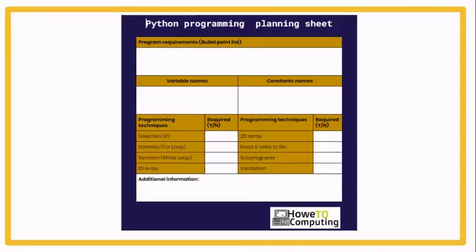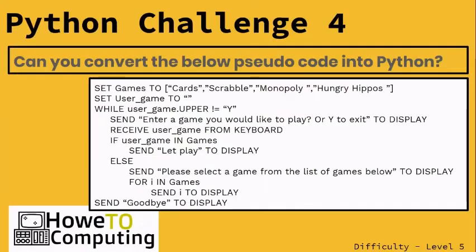One thing you need to be using throughout a lot of these challenges is the planning sheet. You can find it on the link to the resources. This planning sheet enables you to think through a program before you start coding — think about the requirements, possible variables or constants, whether you need to use selection, and so on. Some of these aren't covered yet, but that's what we need to think about.